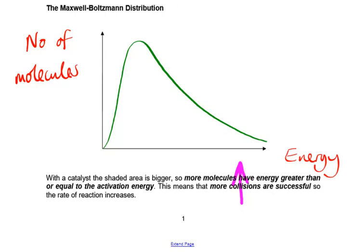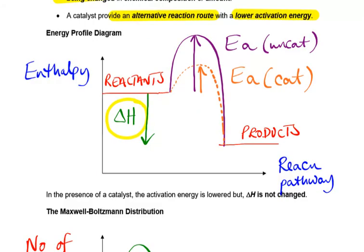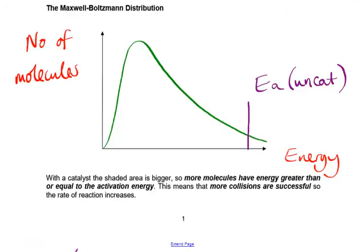You might remember that the activation energy is somewhere down to the right there. And this would be the activation energy for the uncatalyzed reaction. So this is that purple pathway that we put down in the energy profile diagram. And we can see that for the uncatalyzed reaction, we have only a very small proportion of the molecules have an energy which is great enough for them to successfully react.